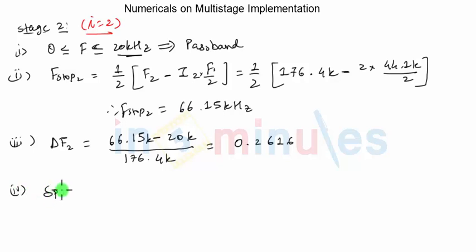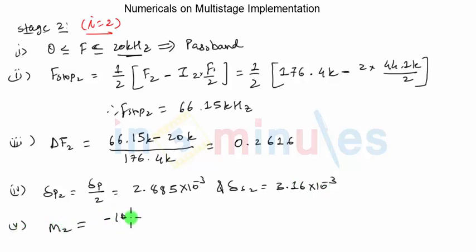In step 4 we will take delta P2. Delta P2 will be exactly same as delta P upon number of stages which is 2. So that will be same as delta P1 which was 2.885 into 10 raise to minus 3 and delta S will be something that never changes. So we had calculated is that it has 3.16 into 10 raise to minus 3. So if you now apply the formula for M2. M2 will be minus 10 log of delta P2 delta S2 minus 13 divided by 14.6 into delta F2 plus 1.